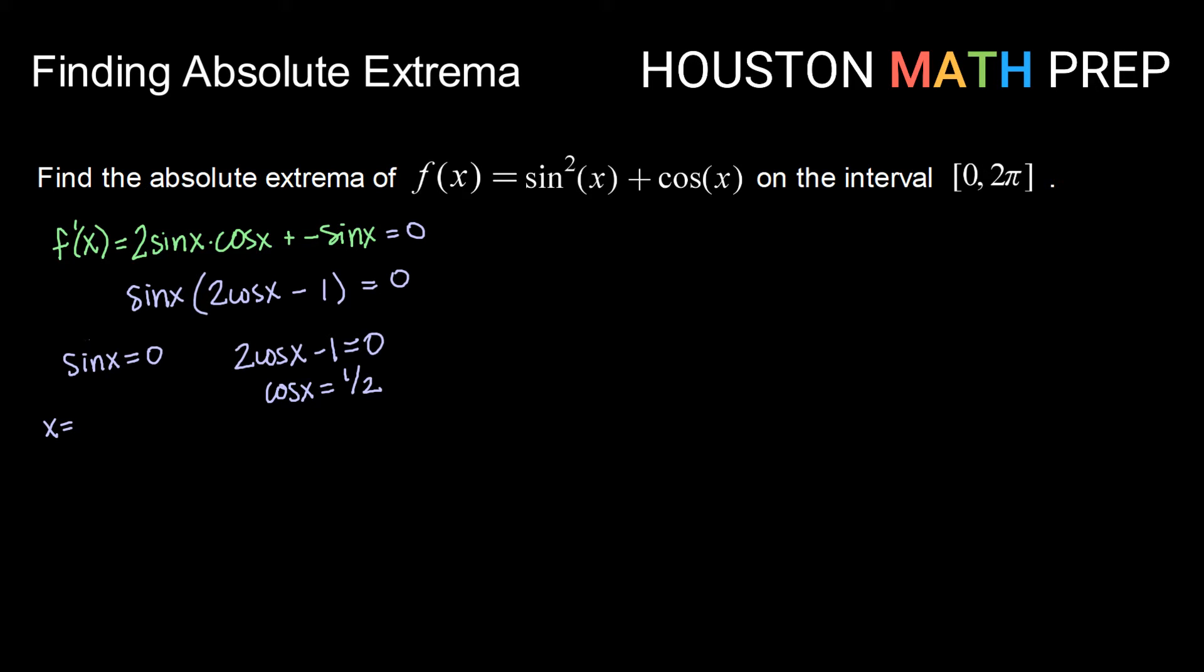Now I can get x values here using my knowledge of the unit circle. So the unit circle tells me that on the interval from 0 to 2 pi, sine will be 0 at 0, pi, and 2 pi. And cosine x will be equal to 1 half on the interval 0 to 2 pi, when x equals pi over 3 and 5 pi over 3.